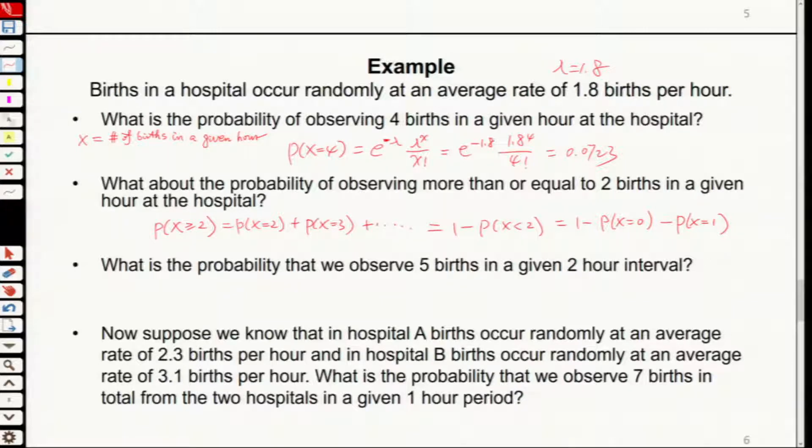Now, if we change the interval, what's going to happen? Previously we have only per hour, in a given hour. Now this is 2 hours. We're asked what's the probability we'll observe 5 births in a given 2 hours. This is called changing the time intervals.